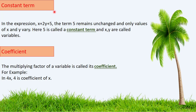In the expression x + 2y + 5, the term 5 remains unchanged, while only the values of x and y vary. Here, 5 is called a constant term because it is a fixed number — it has a fixed value.